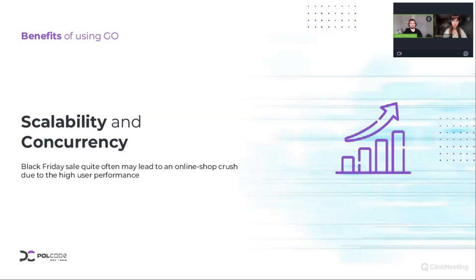What you said about infrastructure sounds interesting — whenever I have this Black Friday sale going on in my shop, what Go can do with proper infrastructure is manage that high traffic. And accordingly, you pay for the infrastructure. But once that huge traffic is gone and the sale is over, you will not need to pay more for your infrastructure because Go will help to scale it down, right? Yes, you got it right.